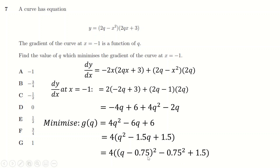I complete the square on the quadratic in q: taking out a 4 and completing the square. I'm not looking for the minimum value of the gradient itself, but the value of q that minimizes it. The squared term is always positive, so to minimize the expression I set it to zero: q = 0.75 (three quarters).